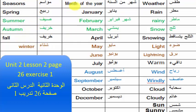Months of the year: January. February. March. April. May. June. July. August. September. October. December.